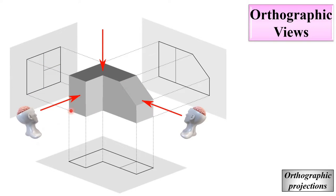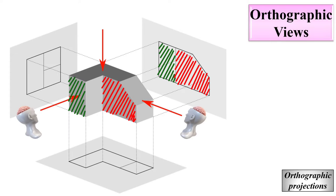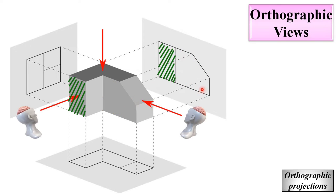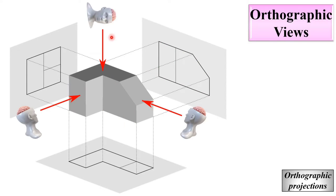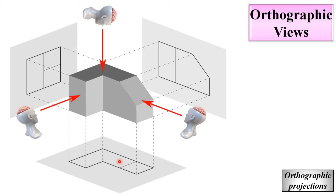From this side, you can see this plane over here and this plane over here. From the top side, you can see this I-shape and then this plane.